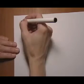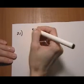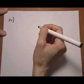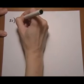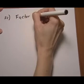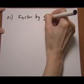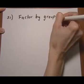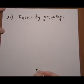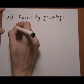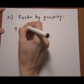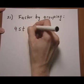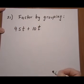So we'll look at, let's see, let's try number 21, still section 6.1. So we want to factor by grouping. And we have 4st + 10t - 10s - 25.